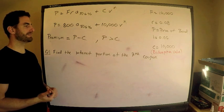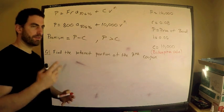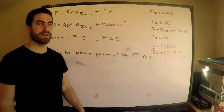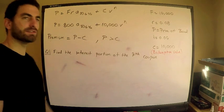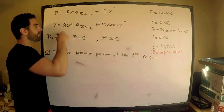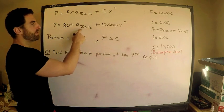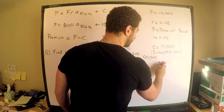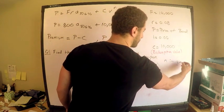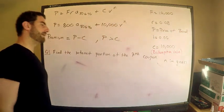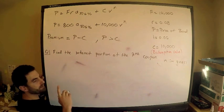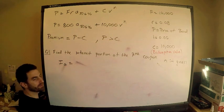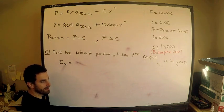Now the question: find the interest portion of the seventh coupon. The seventh coupon means: what is the interest portion associated with the 800 payment in the seventh year? Since coupons are paid annually, n is in years. There are at least two ways I can think of to solve this.